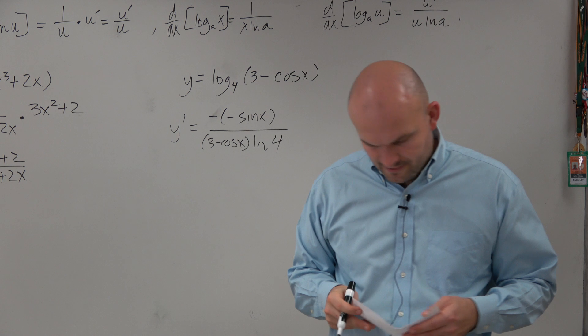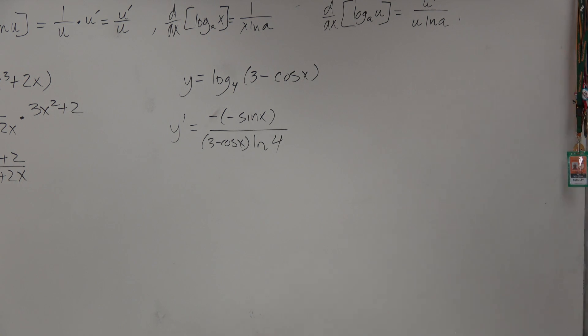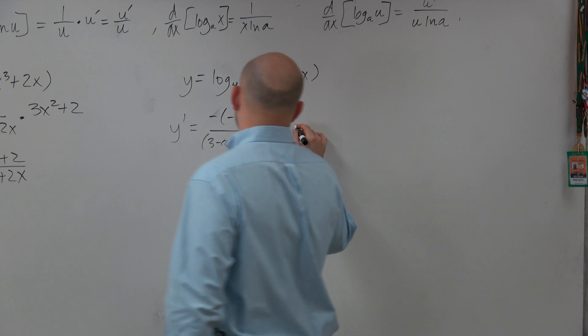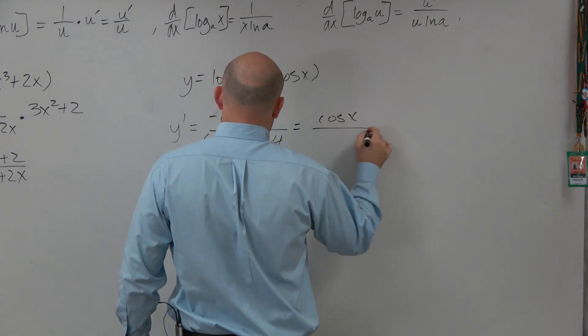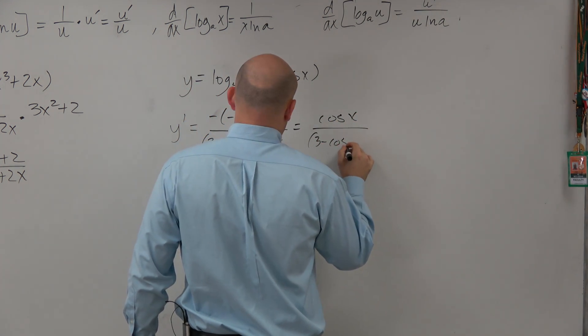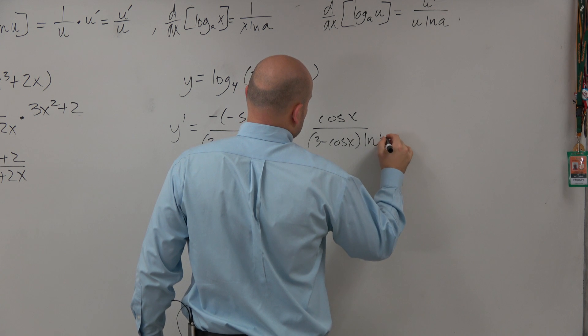Yeah, this should be minus 4. Yeah, I wrote that formula down wrong, sorry. Obviously to simplify this: sine of x over 3 minus cosine of x times ln of 4.